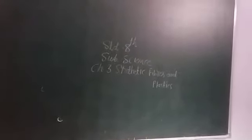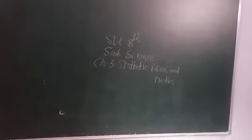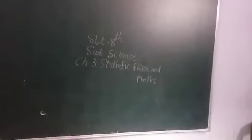Next Number 3. Which man made fiber is made by chemical reaction on wood pulp? Option is A polyester, B nylon, C rayon, D acrylic. The answer is C rayon.